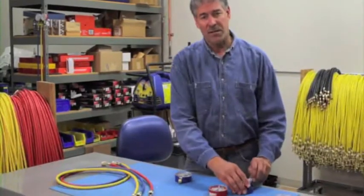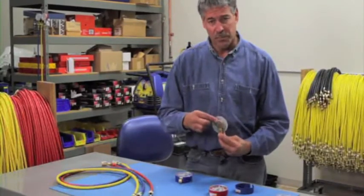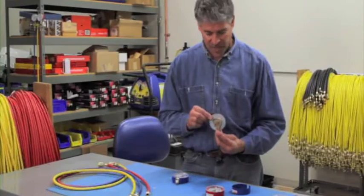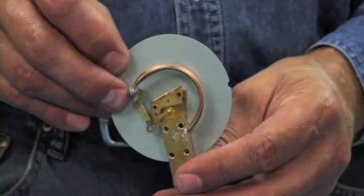When a gauge is overpressurized, the bourdon tube becomes damaged when it goes outside the working pressure of the gauge, as demonstrated by this bubble in the tube.